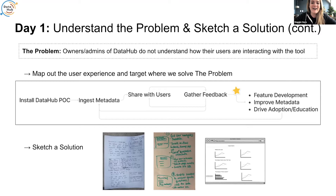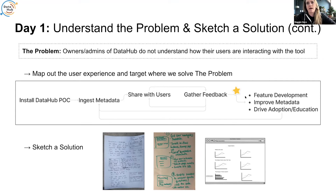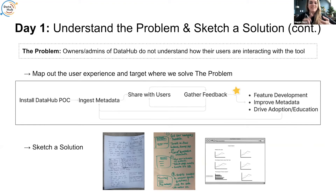Still on day one — it was a busy day. We mapped out the user experience within DataHub to have a concrete understanding of where this solution fit into that workflow. We talked about how you'd install DataHub as a POC, ingest metadata, share it with users, gather feedback, and do iteration cycles. From there you move into feature development and improving metadata. We targeted the idea that the POC exists, there is metadata, there are active users, and we are making decisions about user activity to inform future development, areas to improve metadata, and ways to drive adoption.